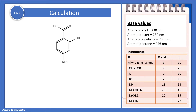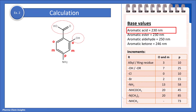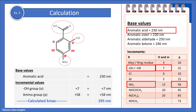Example 2: we have an aromatic acid, for which the base value is 230 nm. We have an OH group at the ortho position and an amino group at the para position. The OH group at the ortho position has an incremental value of 7 nm, whereas the amino group at the para position has an incremental value of 58 nm. When we calculate, we get the lambda max as 295 nm.